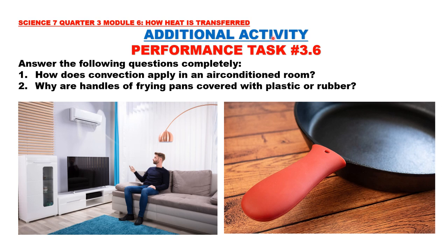Additional activity: Performance Test Number 3.6. Answer the following questions completely. Number 1: How does convection apply in an air-conditioned room? 2: Why are handles of frying pans covered with plastic or rubber? For your performance test, you need to explain how convection occurs inside a room with an air-conditioning unit, and explain why the handles of frying pans are covered with plastic or rubber.